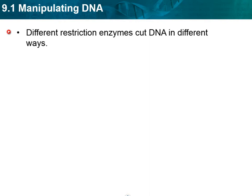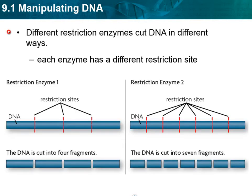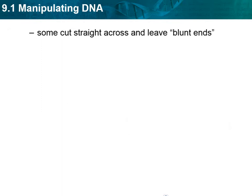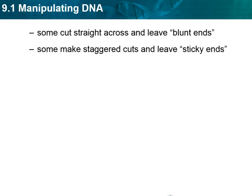Different restriction enzymes cut DNA in different ways — each enzyme has a different restriction site. You can see restriction site one cuts in those spots, and restriction site two cuts at different spots. We'll be doing a lab where you'll see where the restriction enzyme would cut within a DNA sequence. Some cut straight, leaving what are known as blunt ends; others make staggered cuts which leave an overhang, and those overhanging ends are called sticky ends because, like the sticky side of tape, they want to attach to something and join up.